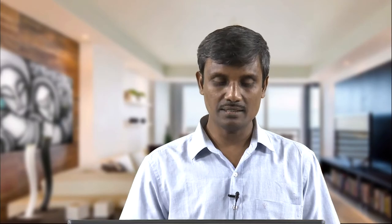Why can they not continue even after the iron peak? Coulomb barrier considerations are always there — even up to the iron peak, Coulomb barrier considerations were present. So when elements were able to form up to the iron peak, handling the Coulomb barrier, why cannot it continue even after? If it did continue, the curve would be much steeper. But practically, the abundance data shows the curve is not as steep as expected.